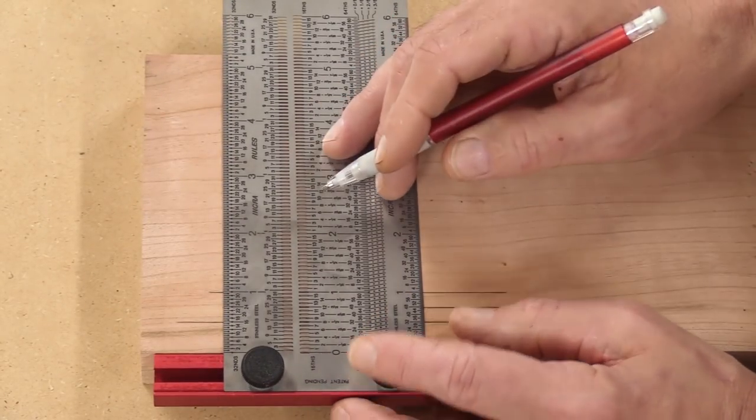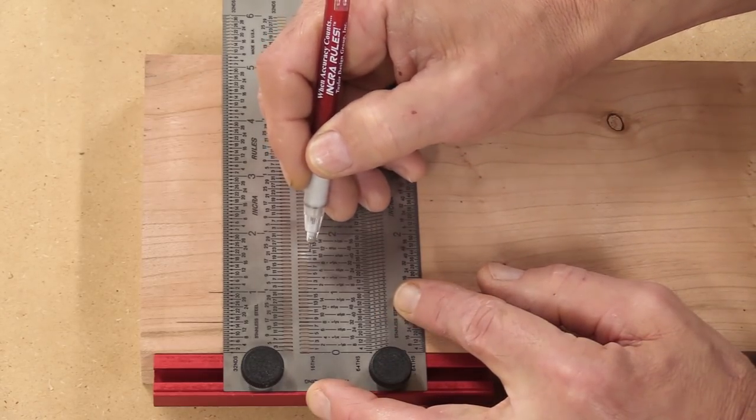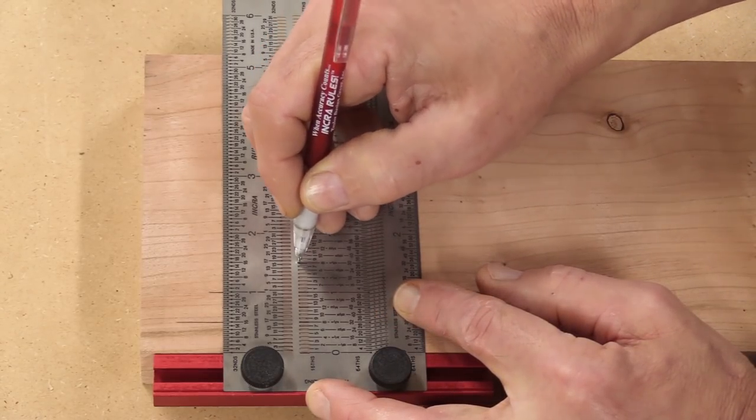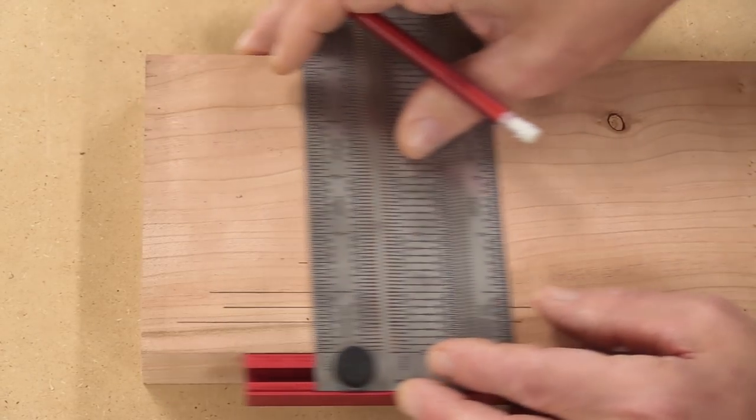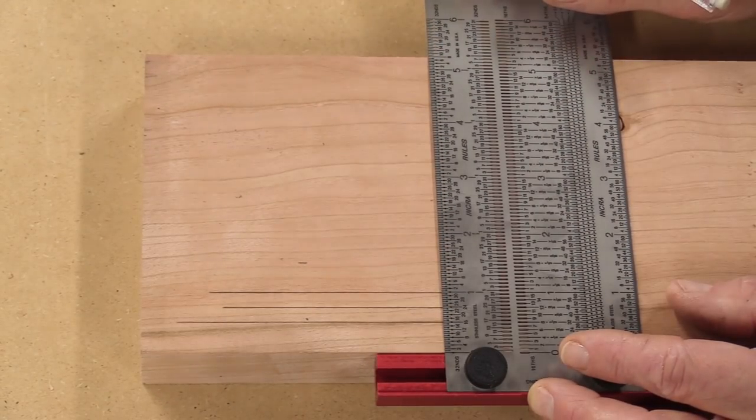Now I can also take this, and let's say I just want to make a mark at one and a half inches. I can just put that in the slot there, and now I've got a mark at one and a half inches.